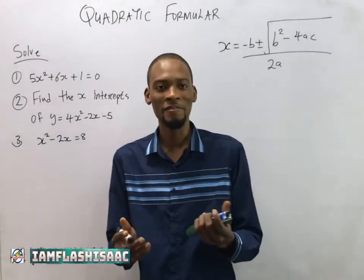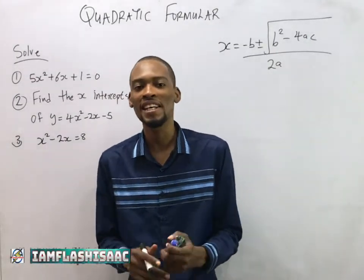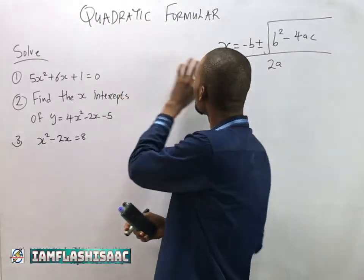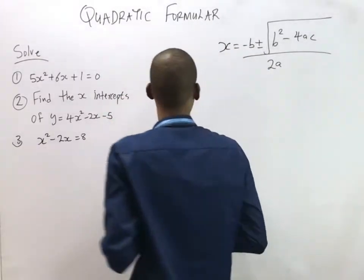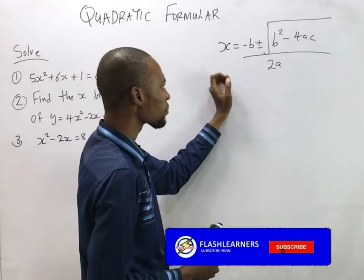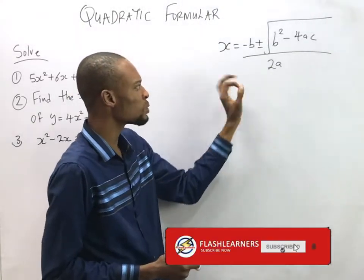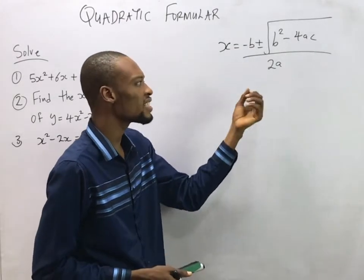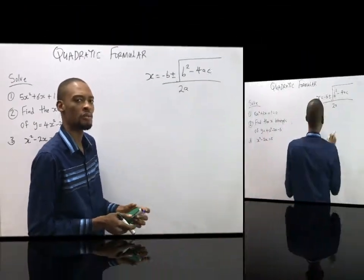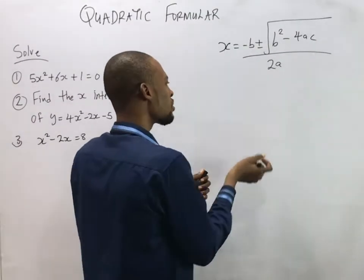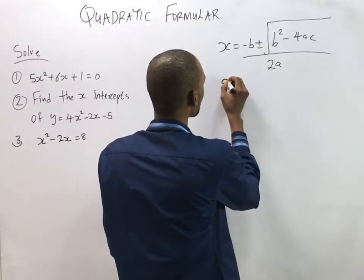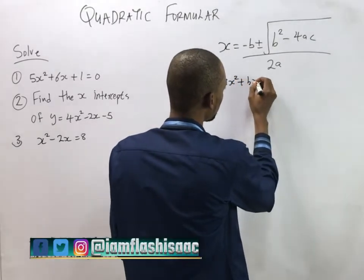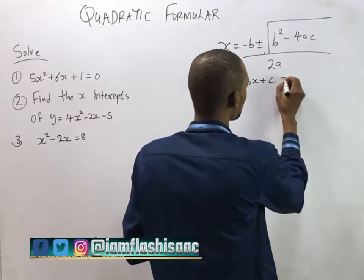Hello guys, I am FlashIsaac and today I will be solving quadratic equations using the formula method. The quadratic formula is: x equals minus b plus or minus square root of b squared minus 4ac, all over 2a. The standard form for a quadratic equation is ax squared plus bx plus c equals zero.